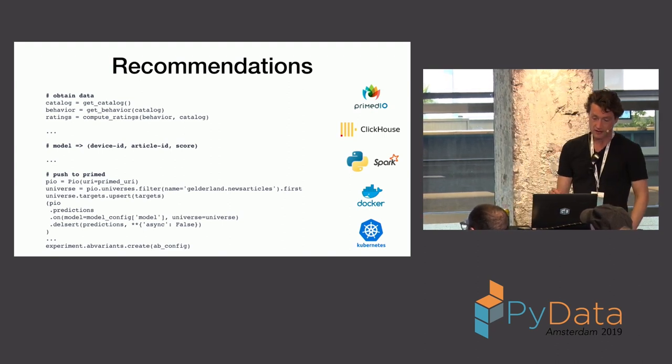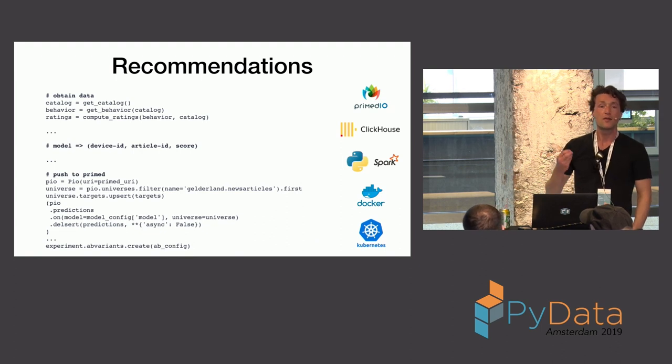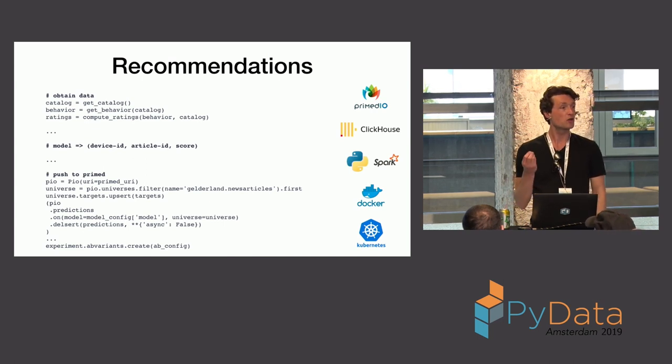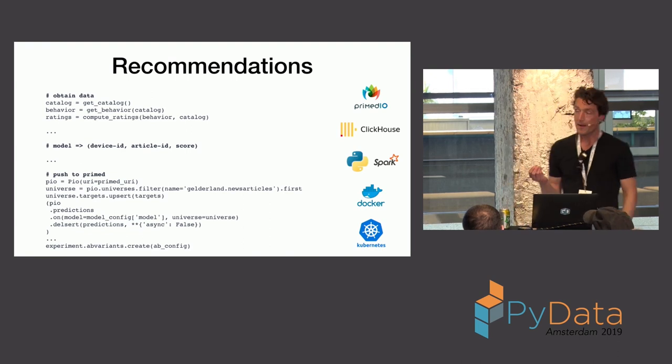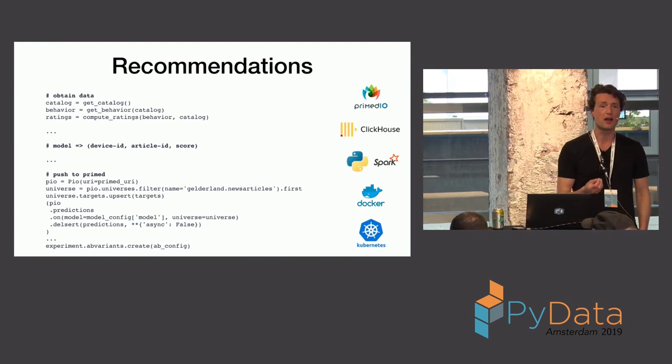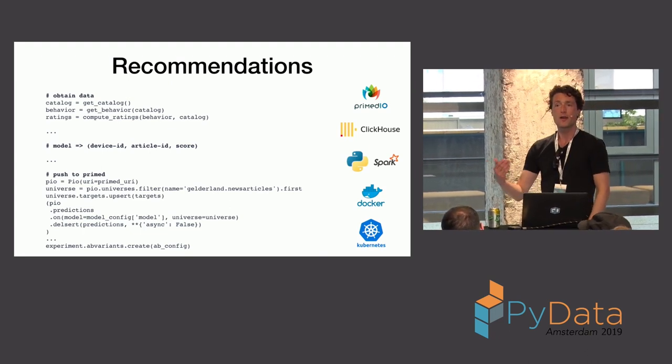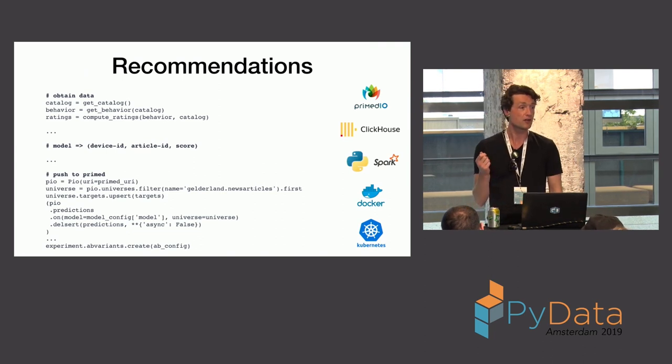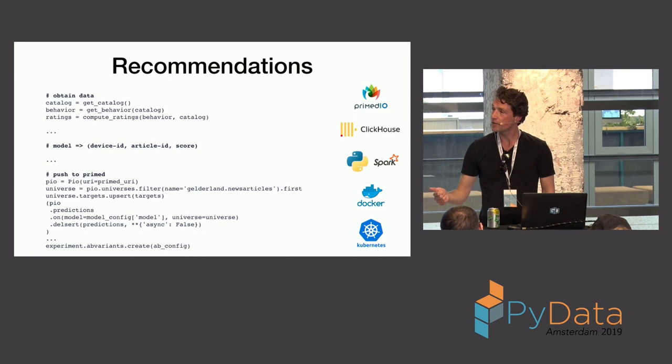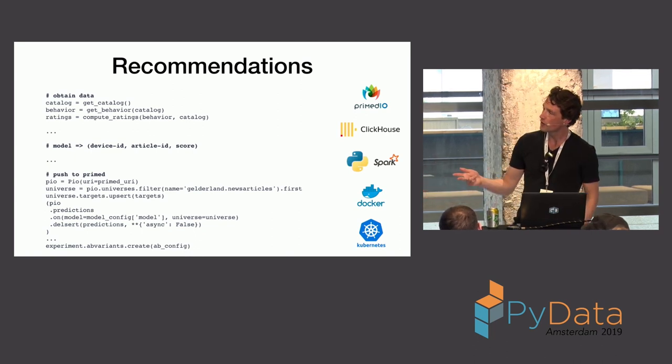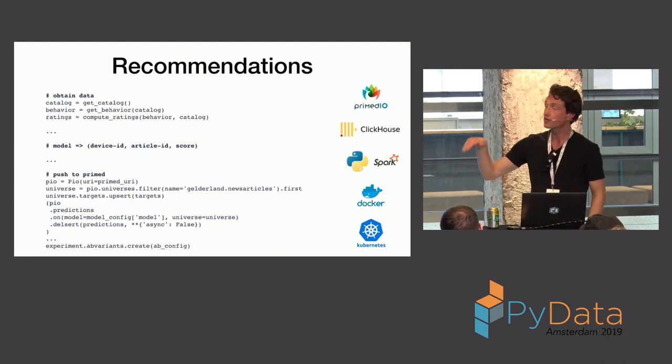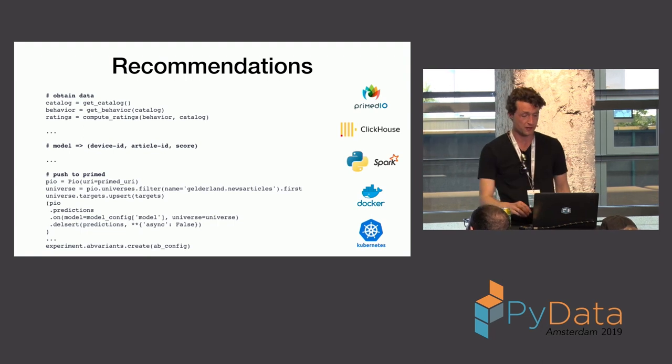And then, you know, the first thing you do, of course, is pull in the data. Then it's up to me to do some modeling. In this case, it boils down to, for a certain device and a certain article, compute a certain score. And then I can interface to primed. So, there is a Python API that I can talk to and that I can just push the scores to, that I computed. And I can make experiments. I can make campaigns. I can create models. I can give names to those models. And then all the feedback will be stored again in ClickHouse. And then I can compute metrics from that.